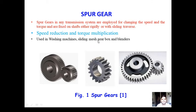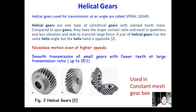We will study the sliding mesh gearbox and other types of gearboxes in a later part of this chapter. In helical gears, the teeth are inclined — not parallel to the axis of the shaft. These helical gears are a type of cylindrical gear with a slanted tooth trace. Compared to spur gears, they have a larger contact area ratio, excellent quietness, less vibration, and are able to transmit large forces.